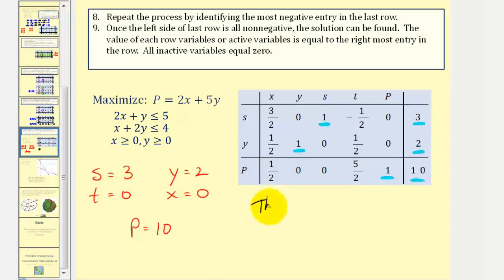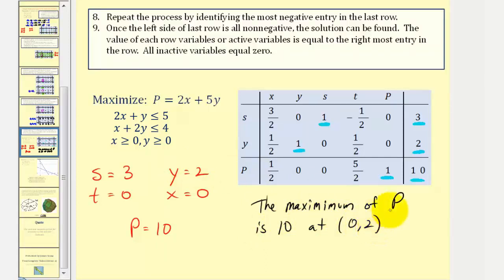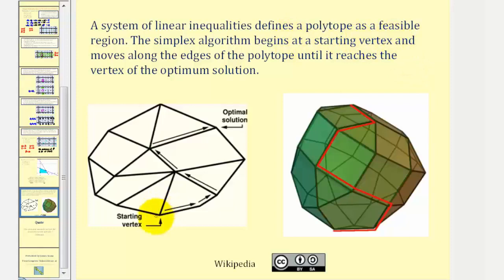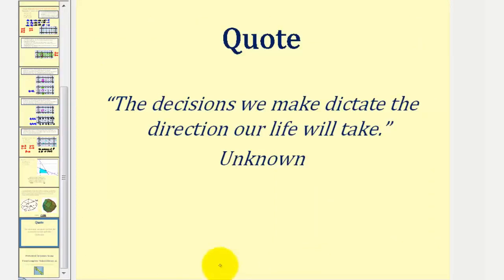To summarize, the maximum of p is ten at the point (0, 2). Now this is a very straightforward example — many times we do have to repeat the process because after pivoting once we still have negatives on the left in the bottom row. Comparing this to solving a similar problem using linear programming, we would have graphed the feasible region, found the vertices, and substituted those values into p — giving us the same solution: max is ten at (0, 2). When we apply the simplex method, the algorithm begins at a vertex and moves along the edges of the polytope until it reaches the vertex of the optimum solution. I hope you found this helpful.